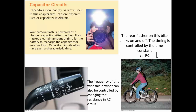RC circuits have many real-life applications. In a camera flash system, the capacitor is charged through a resistor in a basic RC circuit. Flashing lights use the charging and discharging behavior, and the frequency can be controlled by changing the RC time constant value. A windshield wiper's frequency can also be controlled by changing the resistance in its RC circuit.